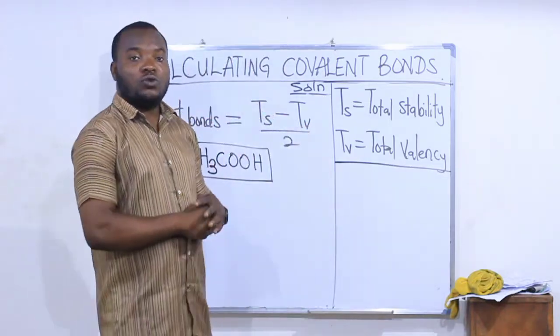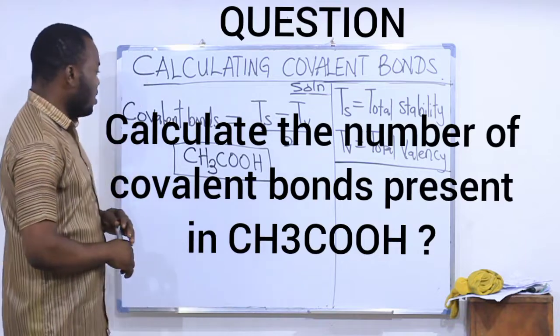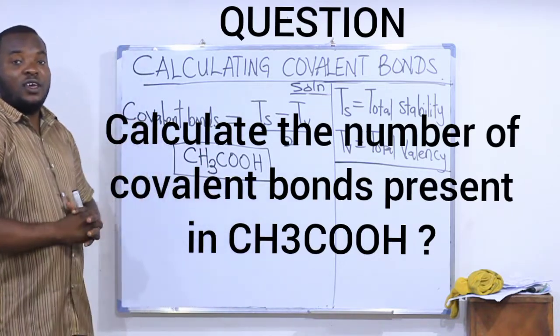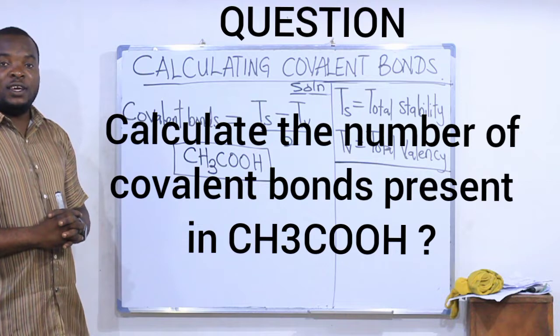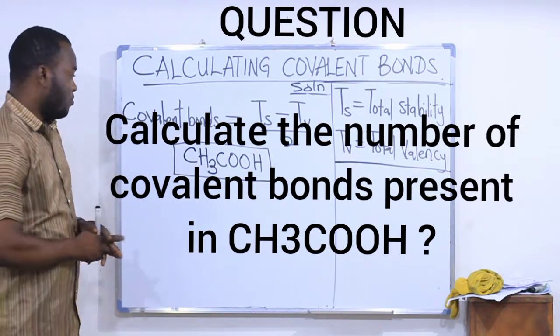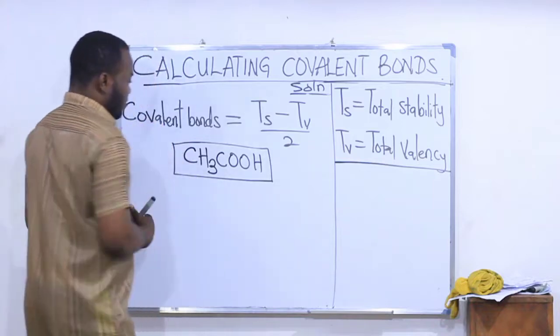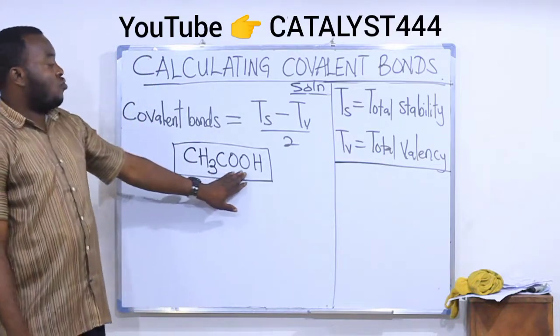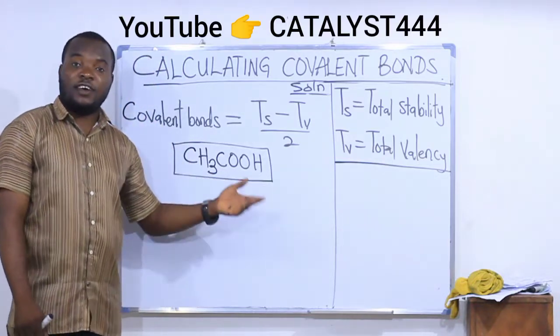Now let's quickly look at this question that says calculate the number of covalent bonds in CH3COOH. CH3COOH means ethanoic acid.